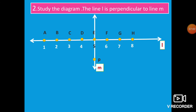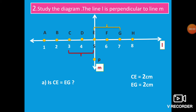Study the diagram. Line L is perpendicular to Line M. Line L is horizontal and Line M is vertical. There are 8 points from A to H, and the perpendicular line is PE. Question A: Is CE equal to EG? Between 2 points there is 1 centimeter, so A to C is 2 centimeters. From C to E is 2 centimeters and from E to G is also 2 centimeters. Therefore CE equals EG — the answer is yes.